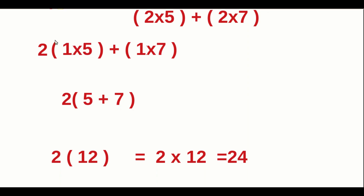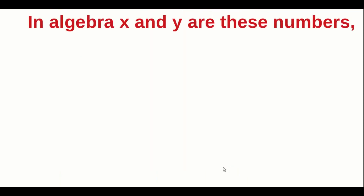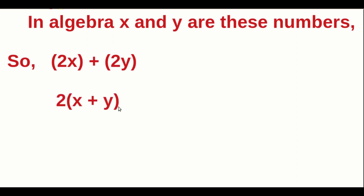Now in Algebra, consider X and Y are these numbers. Then we have 2X plus 2Y. In both terms, 2 is common, so we can take 2 outside the bracket, giving us 2 into X plus Y. When we multiply 2 back into X, we again get 2X, and 2 into Y gives us 2Y. So 2X plus 2Y equals 2(X plus Y).